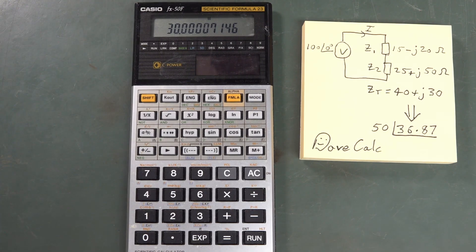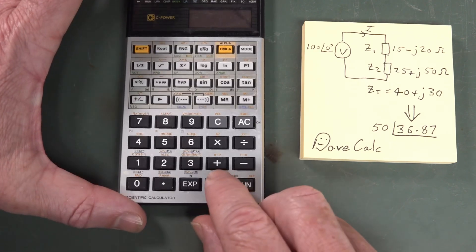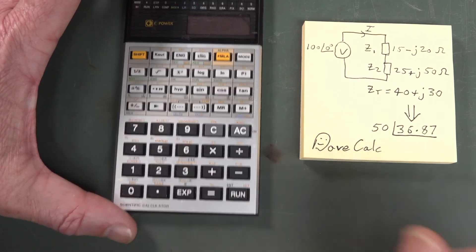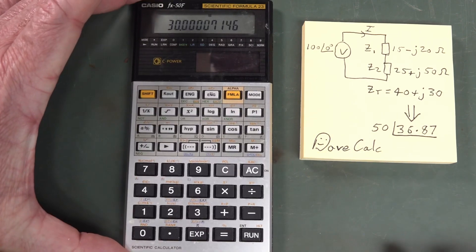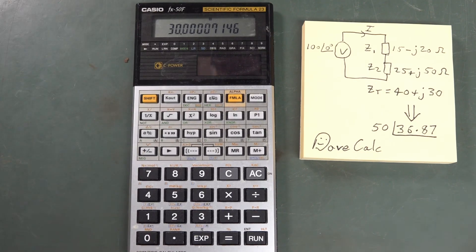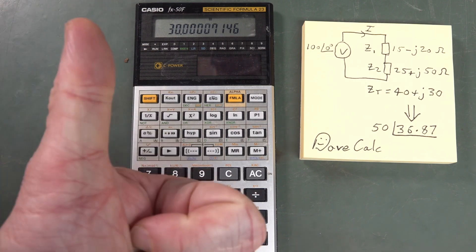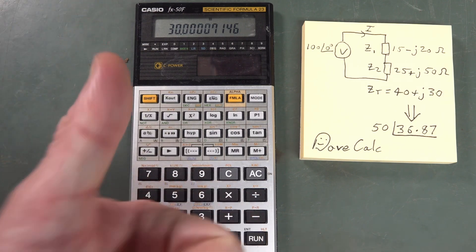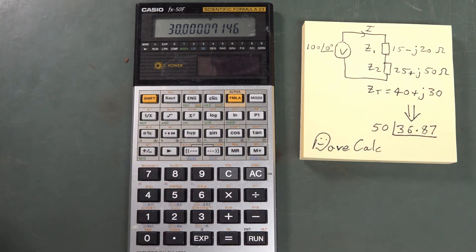Other brand calculators might do this slightly differently, of course, but any good scientific calculator will have R to P and P to R modes. And that's what those magic buttons are for — very, very handy. If you liked that video and found it useful, give it a big thumbs up and discuss down below. Catch you next time.